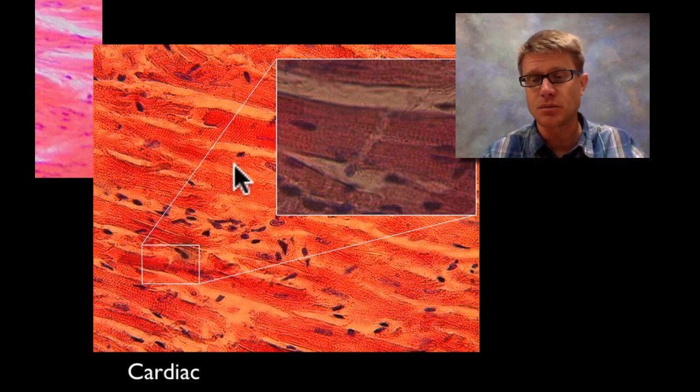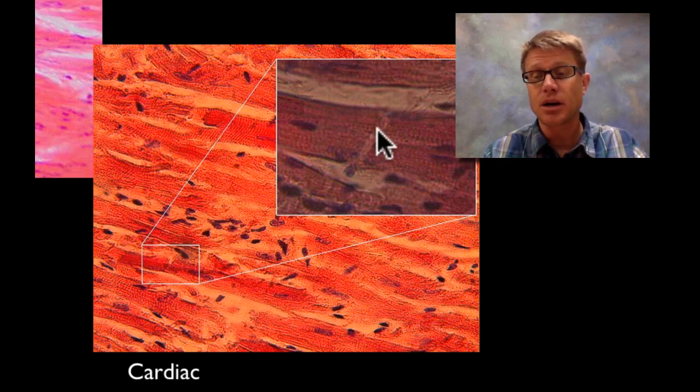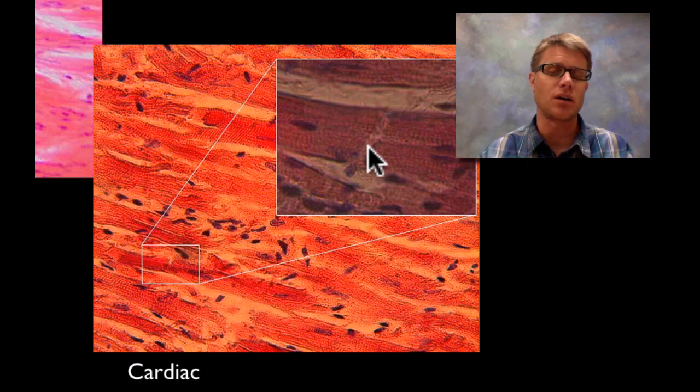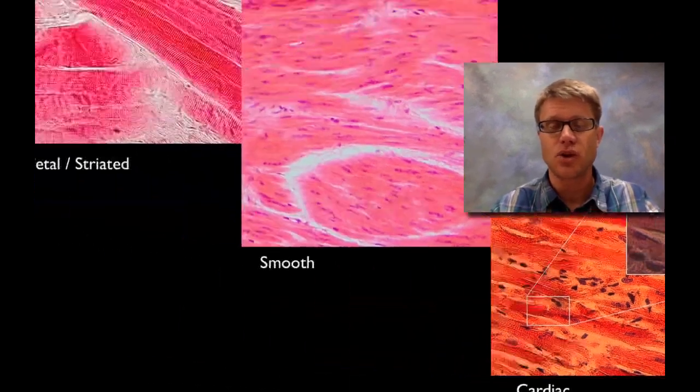And then something kind of a combination between the two is the cardiac muscle. It looks striated, but cardiac muscle is only going to be found in the heart. And so it has these nice little intercalated disks which allow the transmission of electrical signals to wash over them. And that's how a heart is able to contract.